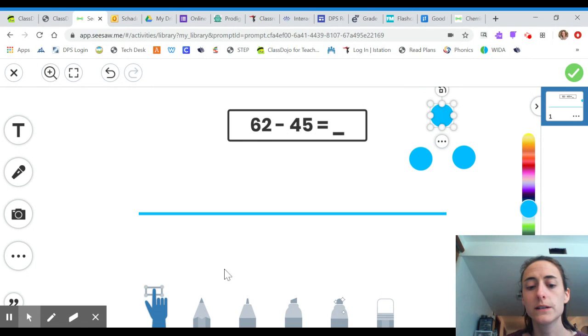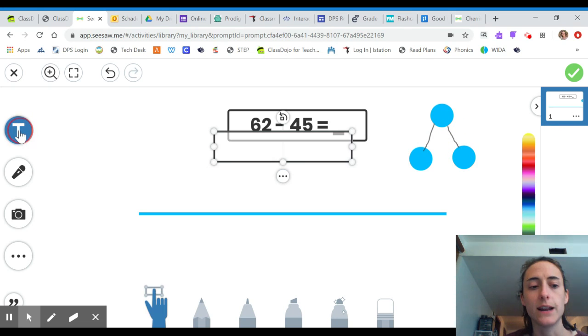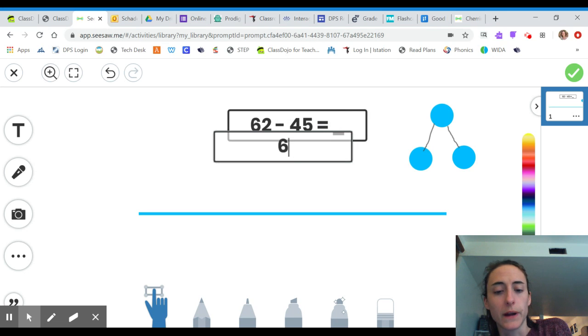So here's my number bond that I'm setting up and the parts that I have right now, well the whole that I have right now, because when I subtract I start with my whole, I take out a part and I find the part that's left. So my whole that I'm starting with is 62.